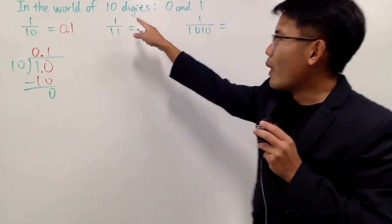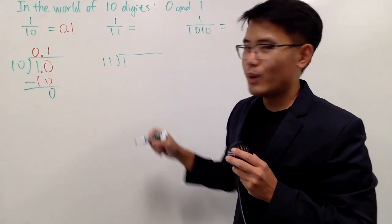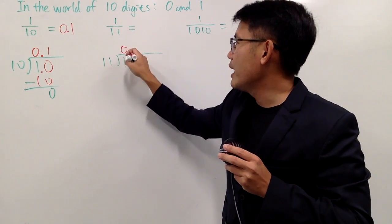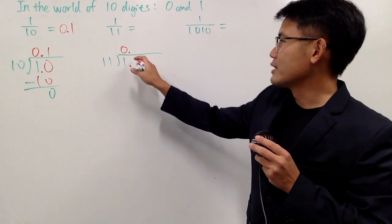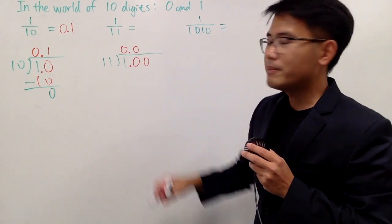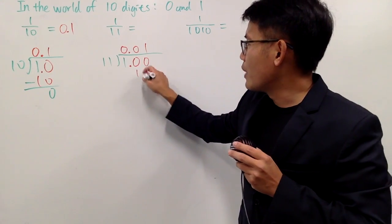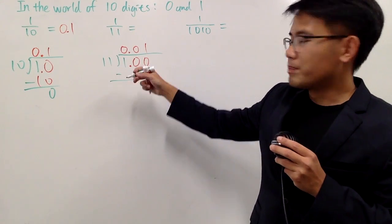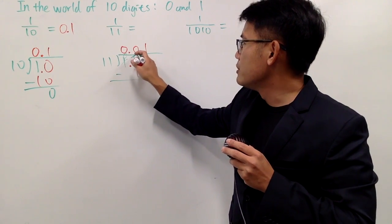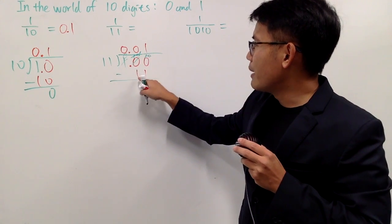Now let's move on to this one: 1 over 11. It's going to be slightly trickier, but it's okay — we can do it. Put the 1 inside, put 11 on the outside. 11 doesn't go into 1, so you put a 0 right here and you put a binary point. Then you say 0 — 11 doesn't go into 10, so you put a 0 and put another 0. 11 goes into 100 one time. 1 times 11 is 11. Subtract: 0 minus 1 you have to borrow, making this 0 and this into 10. 10 minus 1 is 1, and then 1 minus 1 is 0.